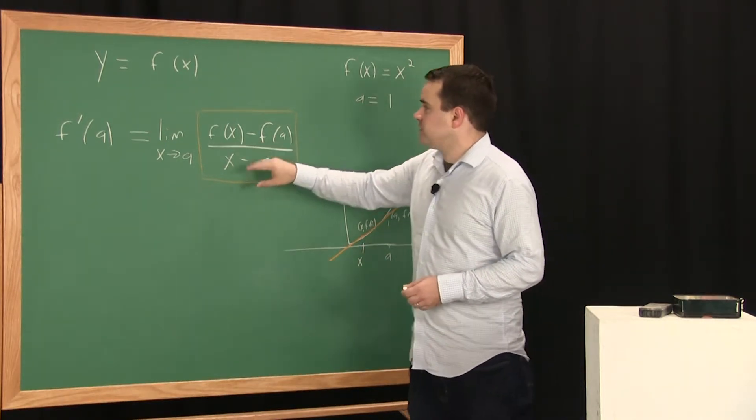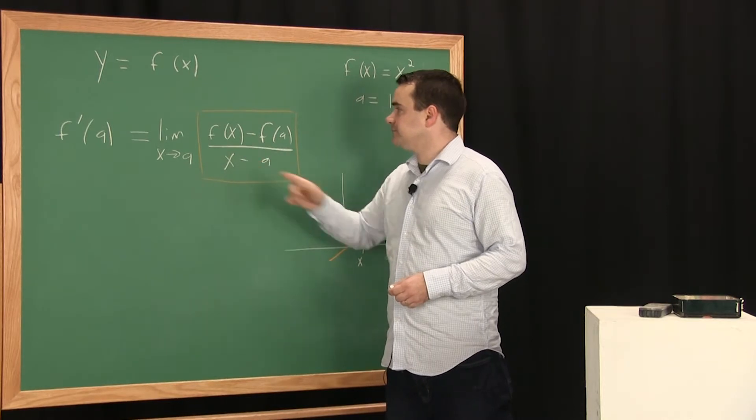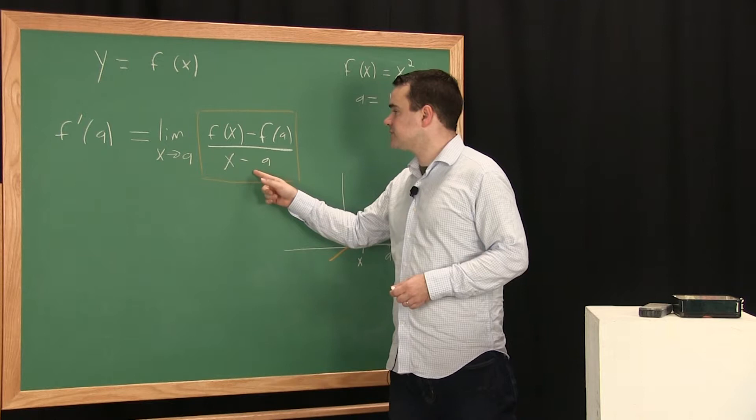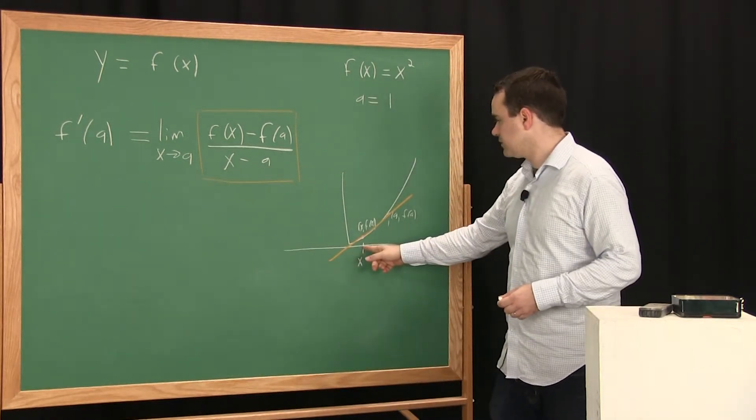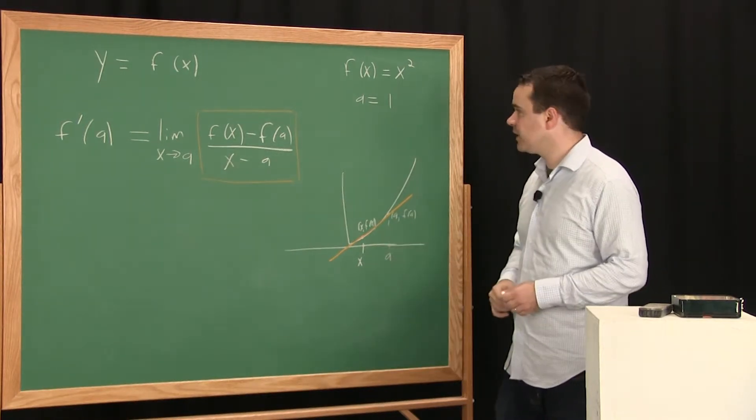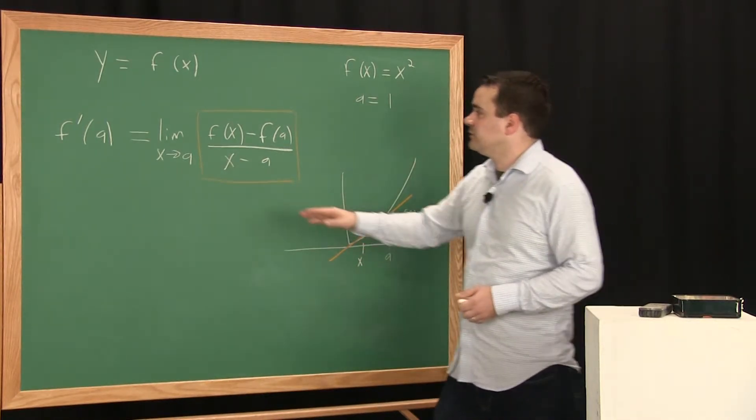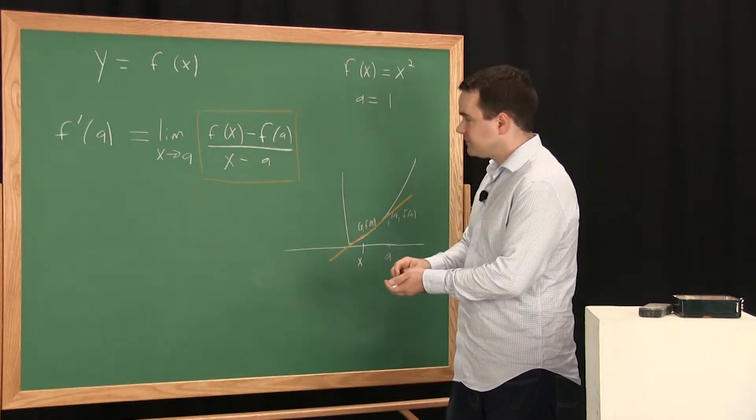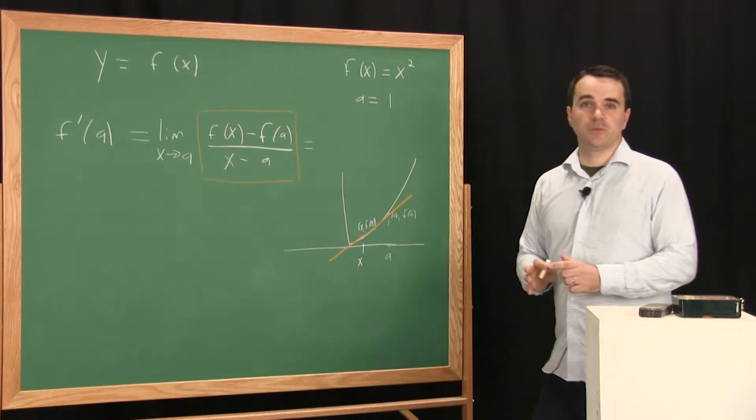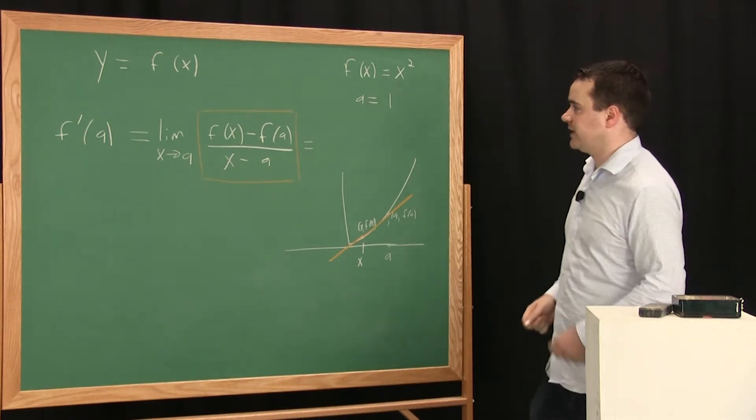And so what you're doing is you're taking the limit of the slopes of the secant line as those secant lines, as x tends towards a. And so the limit of the slopes of the secant lines, you'll remember that that's the slope of the tangent line to f of x at a.